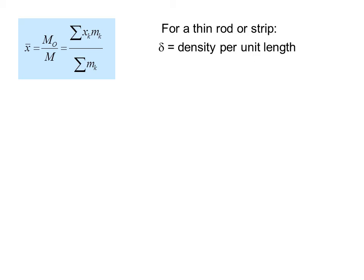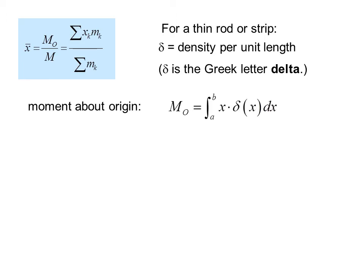For a thin rod or strip, delta equals the distance per unit length. The moment about the origin is M_o equals the integral from a to b of x times delta as a function of x dx. The mass is the summation from a to b of delta as a function of x dx.